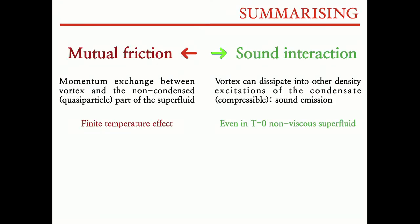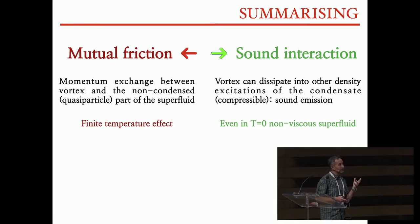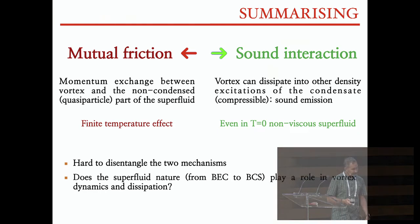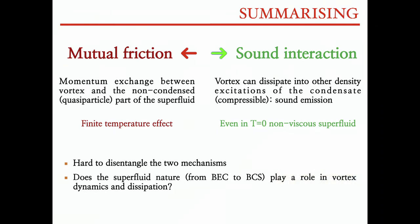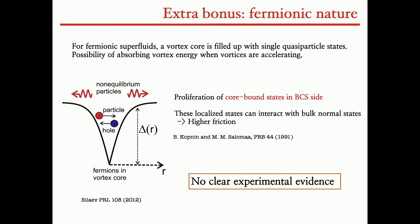Just to summarize this long introduction: we have two kinds of possible mechanisms for the vortex to lose energy. One is mutual friction that we can say is a finite temperature effect, and then there is also the interaction with sound that should happen also at T equals zero - it's not depending on temperature in principle. These are typically difficult to disentangle. In the experiment they're very difficult to disentangle. My point that is more fundamental for me is how the superfluid nature from the BEC-BCS crossover plays a role in this, if it plays any role.